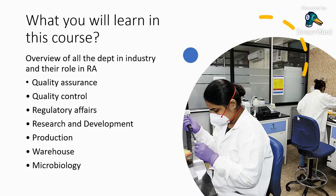Let us see what all things we will learn in this session. We are covering all departments related to R.A. — quality assurance, quality control, and of course R.A. in depth. We will also see R&D, production, warehouse and microbiology. R.A. is a department where you need to correlate with all these departments to coordinate, get documents, write documents, and submit them to the authorities.